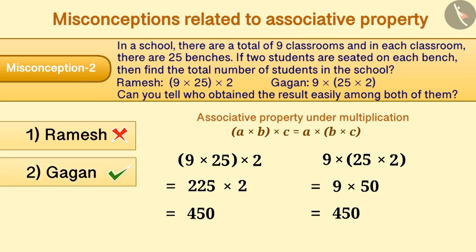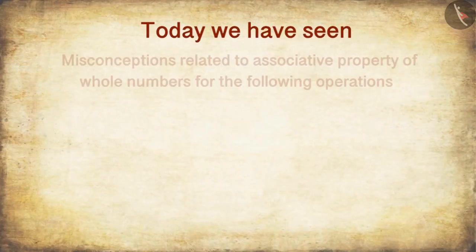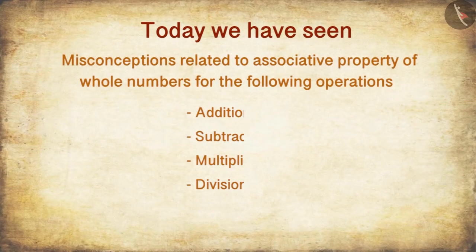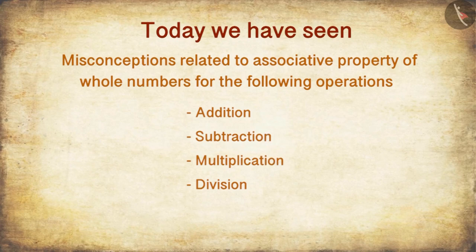Therefore, Gagan must have found the result easily and not Ramesh. Today, we have seen misconceptions related to associative property of whole numbers for the following operations.